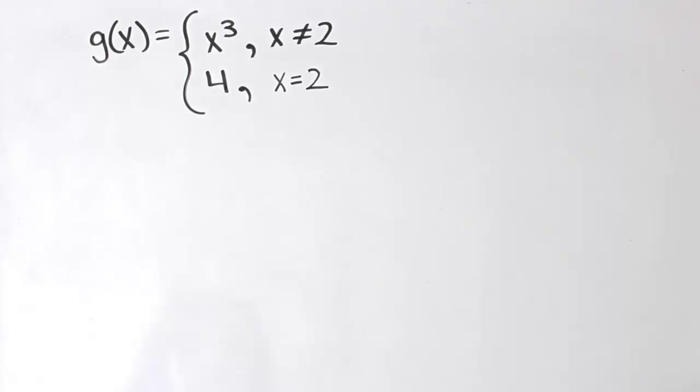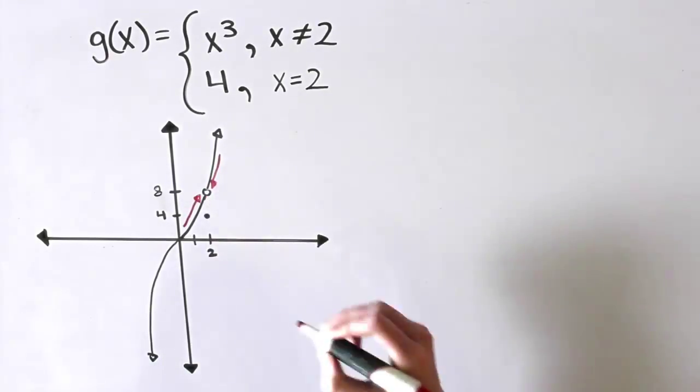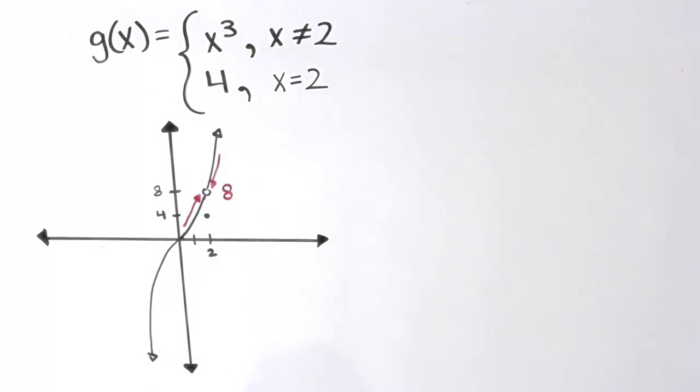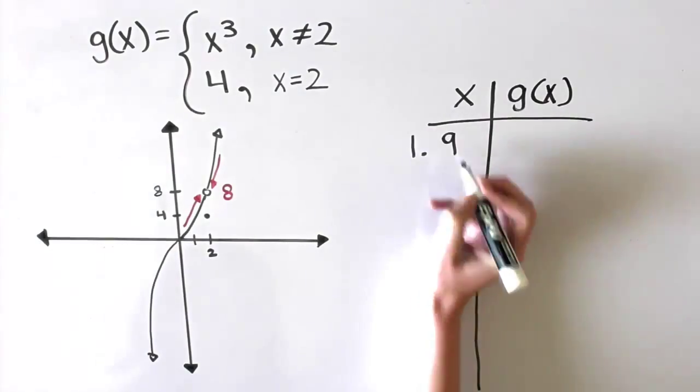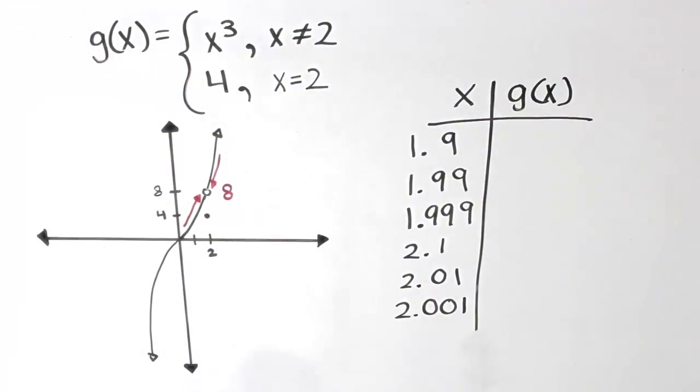We can visually find the limit of g of x as x approaches 2 by looking at the graph, or if you have a function that you don't want to graph, you can find the limit by creating a table of values. Plugging in x values for g of x that get closer and closer to 2 on a calculator, we can tell if the y values approach 8.